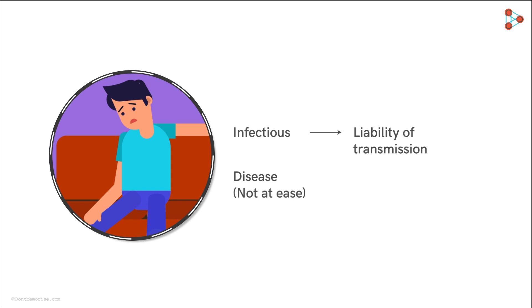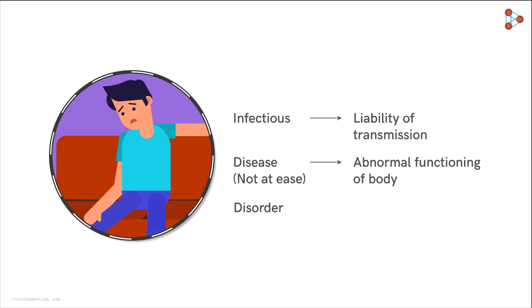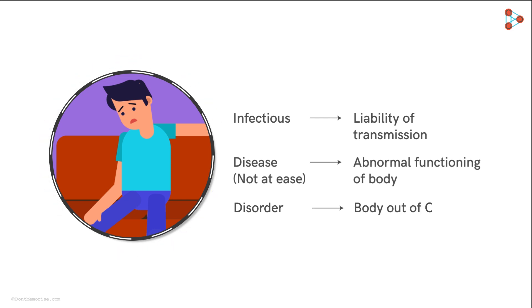The term disease literally means the body is not at ease. So a disease can be defined as an illness caused by numerous factors, which withholds the body from functioning normally. There is one more concept similar to this, which we need to know, and it is called disorder. The term literally means the body is not able to work properly, or simply is out of order.